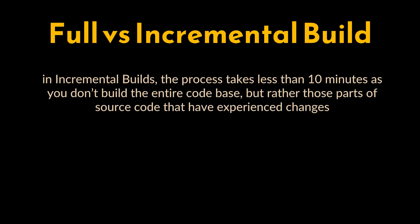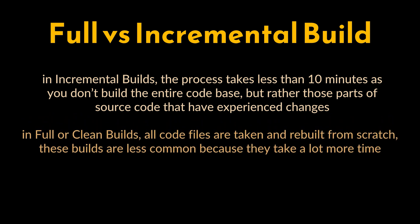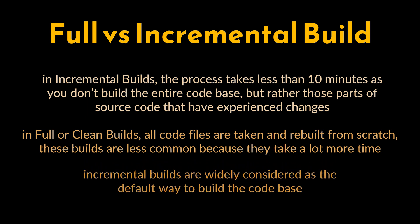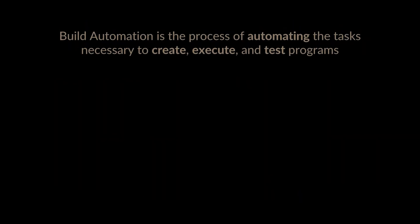Another interesting thing to note is that there are two types of builds: full and incremental. In incremental builds, the process normally takes less than 10 minutes, as you don't build the entire code base but rather only those parts of source code that have experienced changes — build tools take care of finding the changed files. In full or clean builds, all code files are taken and rebuilt from scratch. Incremental builds are widely considered the default way to build the code base.